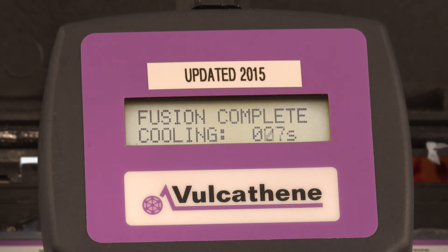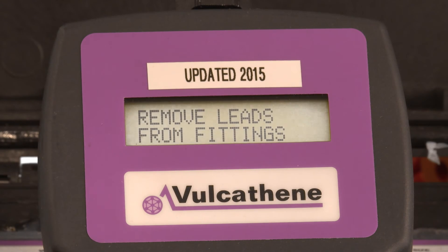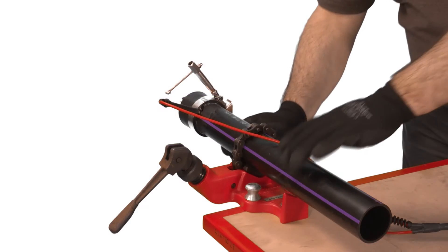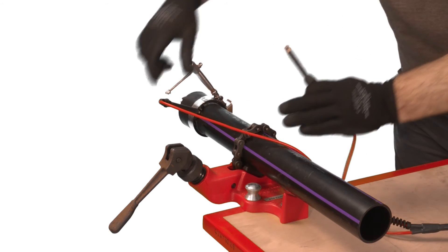When the fusion cycle is complete, the unit will count down a 30-second cooling time. On completion, the display will read 'remove the leads.' Leave the joint undisturbed for at least 5 minutes before removing the clamp.